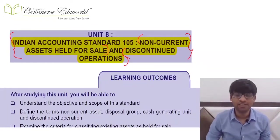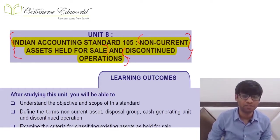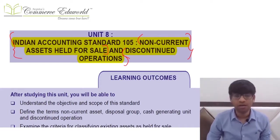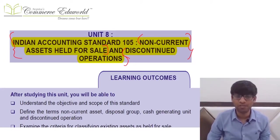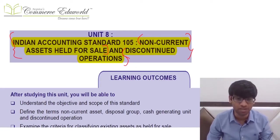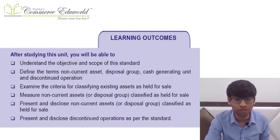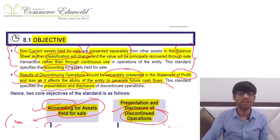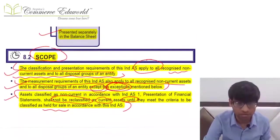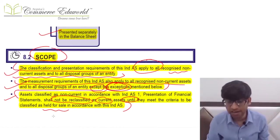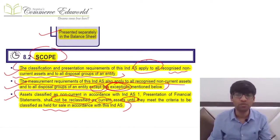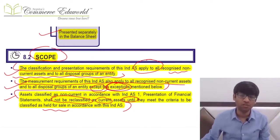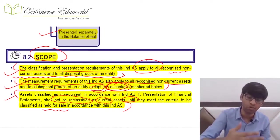Let us revise IND AS 105, the name of the index is Non-Current Assets Held for Sale and Discontinued Operations. We don't have a directly related AS, but there was AS 24 on discontinuing operations. The index in our syllabus is IND AS 105. When we take up this index we will study it in two different parts. We will first concentrate only on non-current assets held for sale. This standard is applicable for non-current assets held for sale and also for disposal groups held for sale.